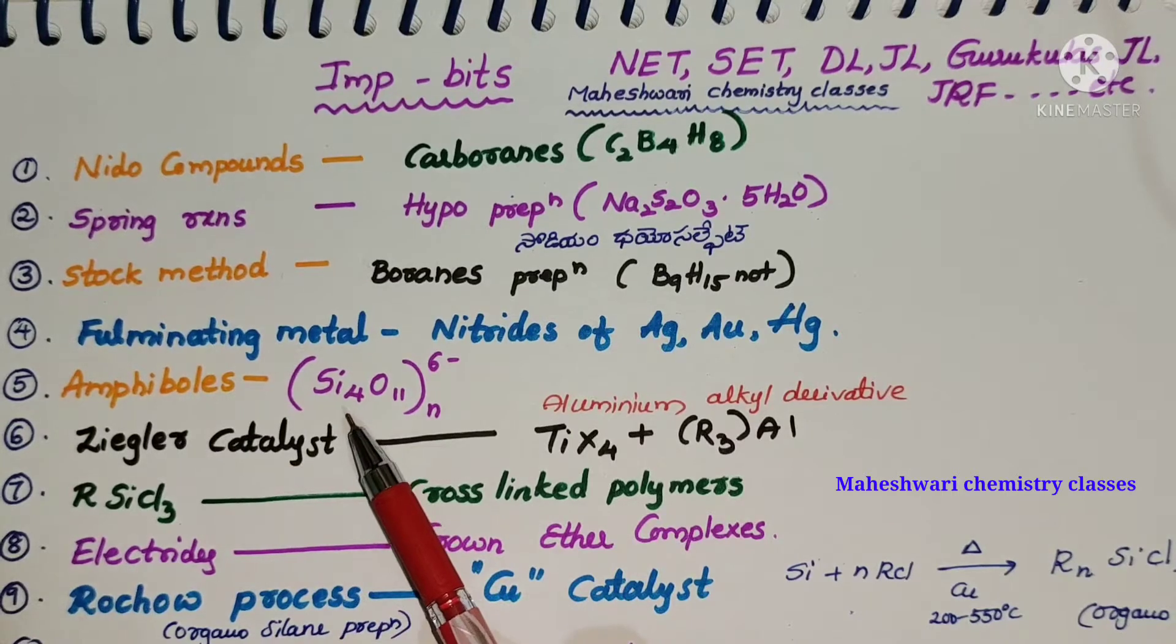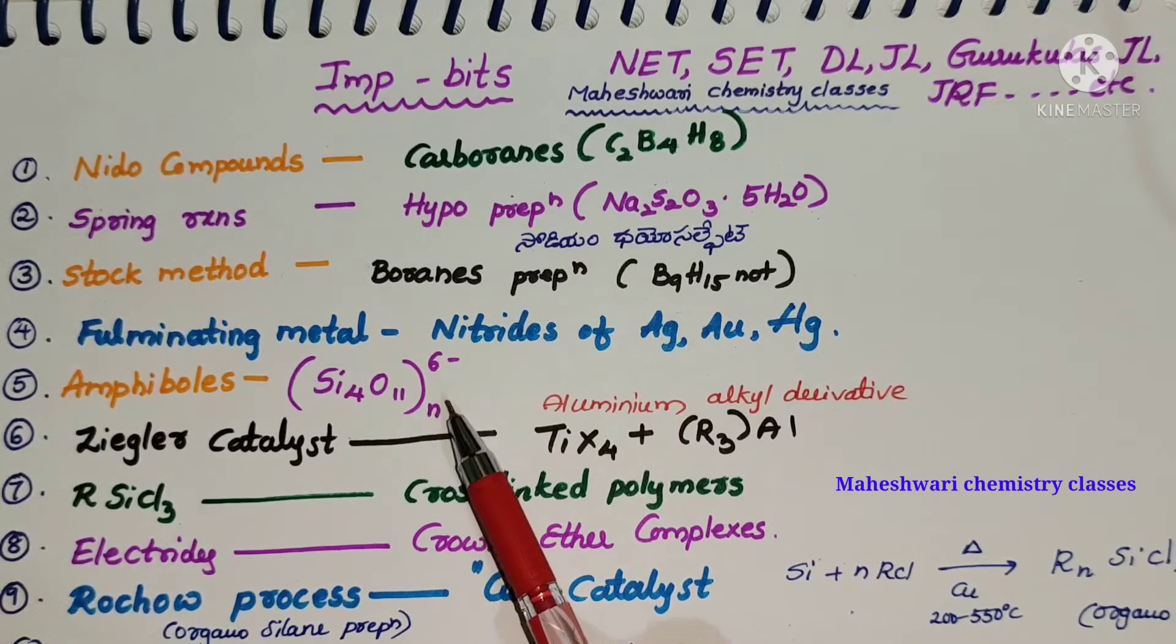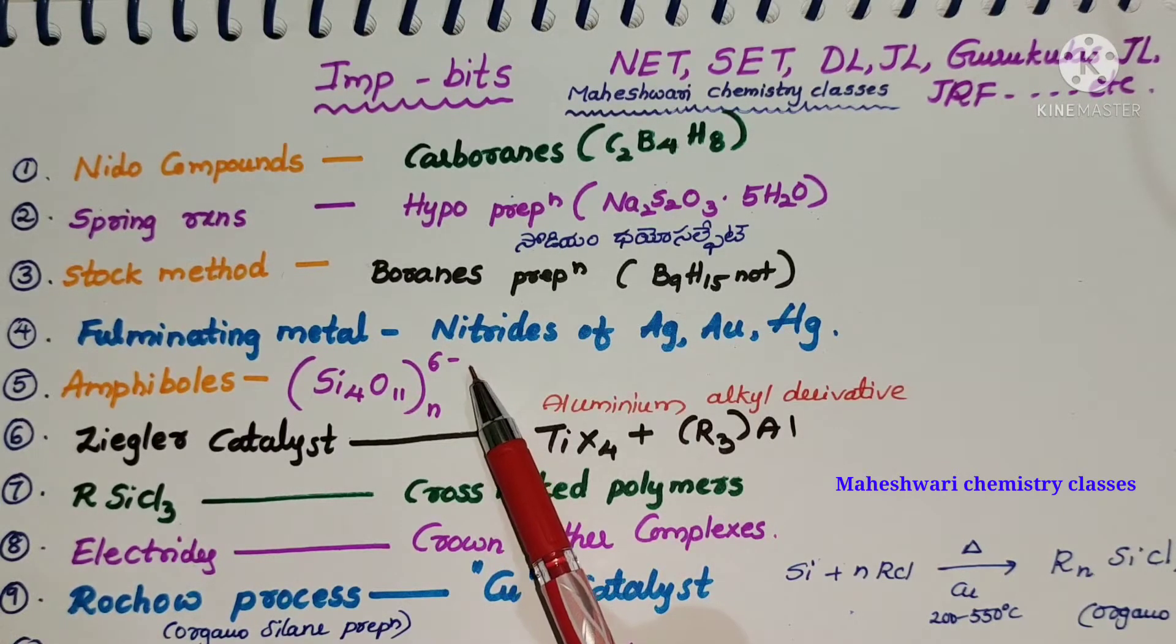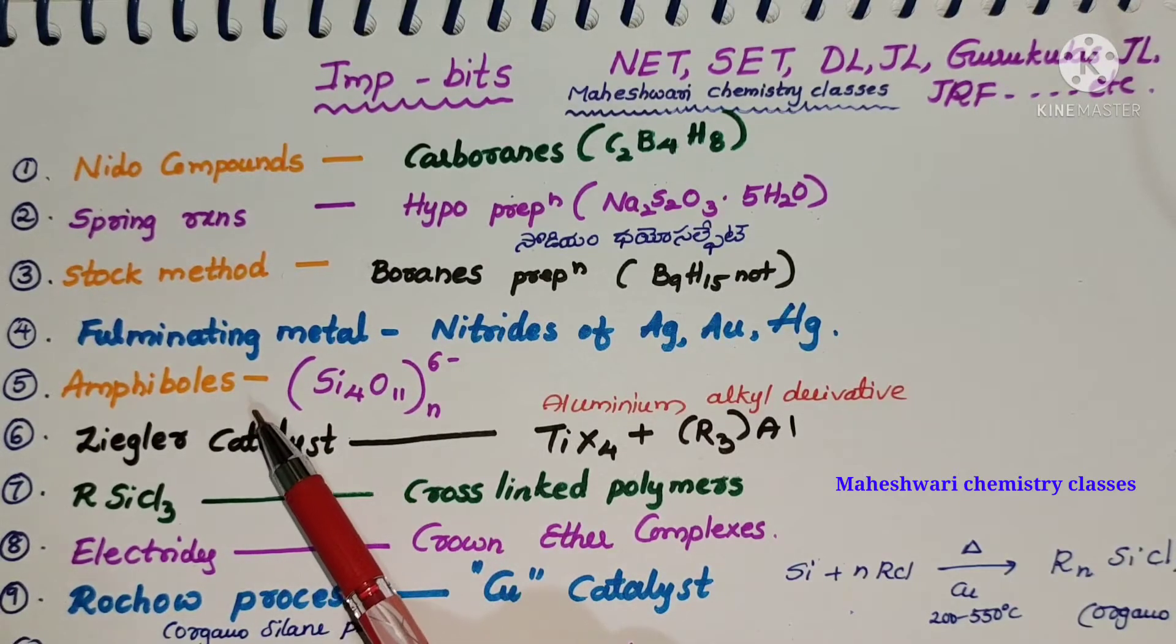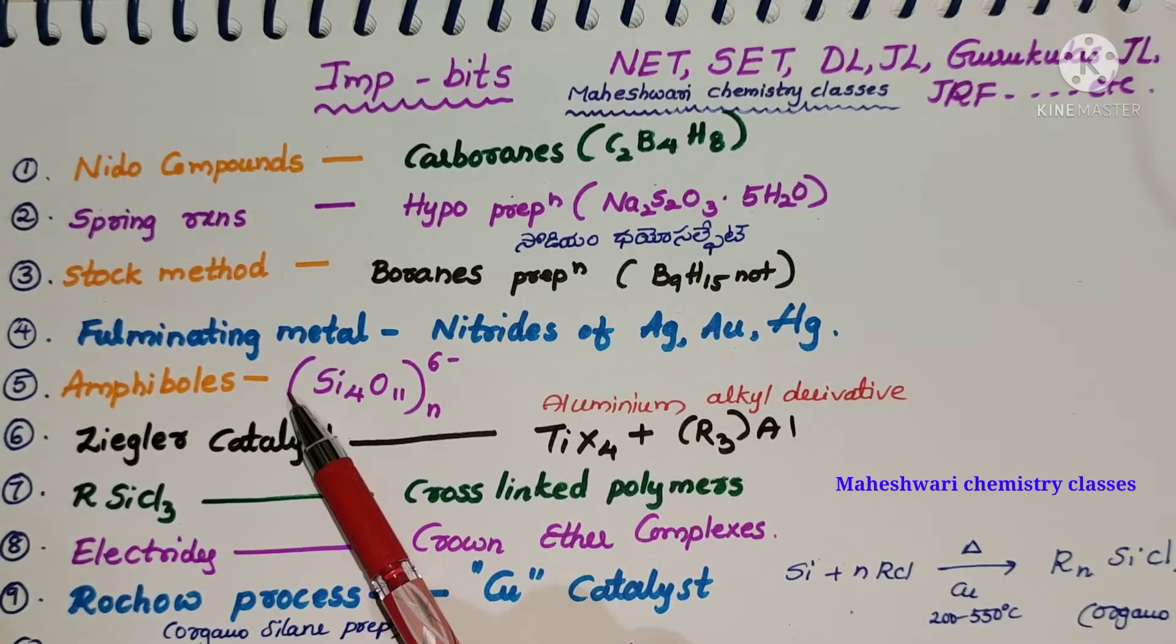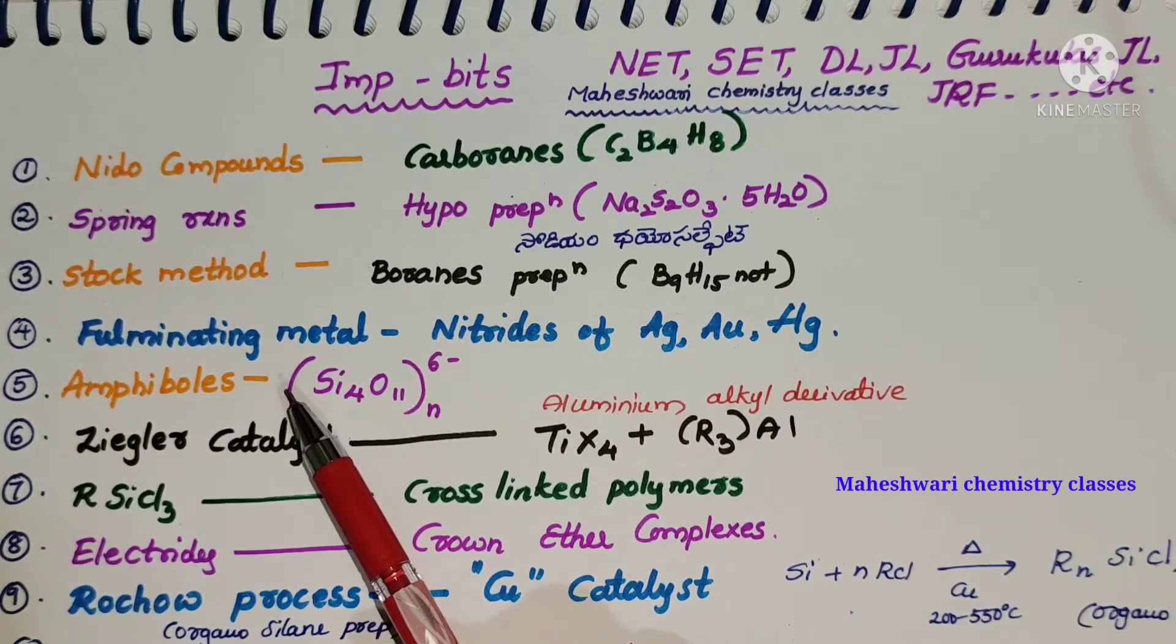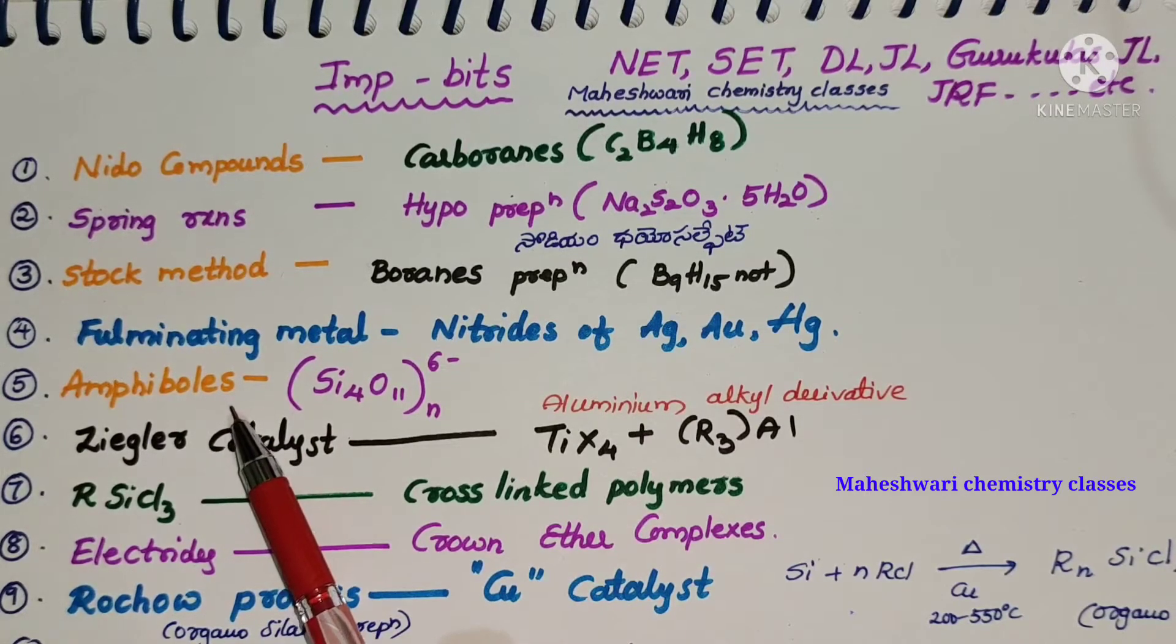Amphiboles, one of the compounds is Si4O11 taken to power 6 minus charge. Every character has a lot of variation of colors and other metals, so the specific character is amphiboles character.